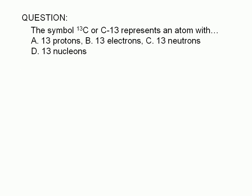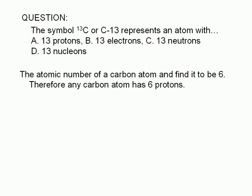The symbol C stands for carbon, and we read this symbol as carbon-13. The number of protons in an atom is equal to its atomic number. The atomic number of carbon is 6. Therefore, choice A is wrong — a carbon atom cannot have 13 protons. Any carbon atom has 6 protons.